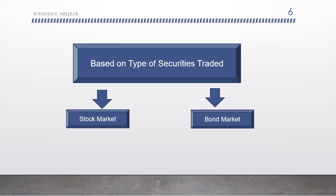Once the new securities have been sold in the primary market, they are traded in the secondary market, where one investor buys shares from another investor at the prevailing market price, based on demand and supply, at whatever price both the buyers and sellers agree upon.